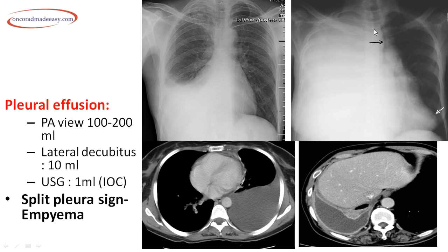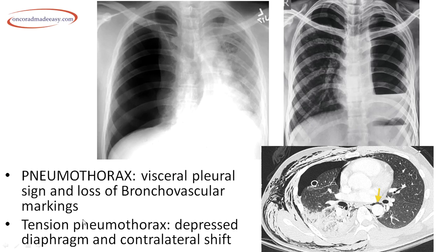In this X-ray there is an opaque right hemithorax — a white-out lung — accompanied by shift of the trachea, mediastinum, and cardiac apex towards the left side, indicative of large or massive pleural effusion. On CT, a large pleural effusion shows the visceral and parietal pleura not visualized. However, if on CT there is pleural effusion accompanied by thickened enhancing visceral and parietal pleura, this is the split pleura sign and is indicative of empyema.